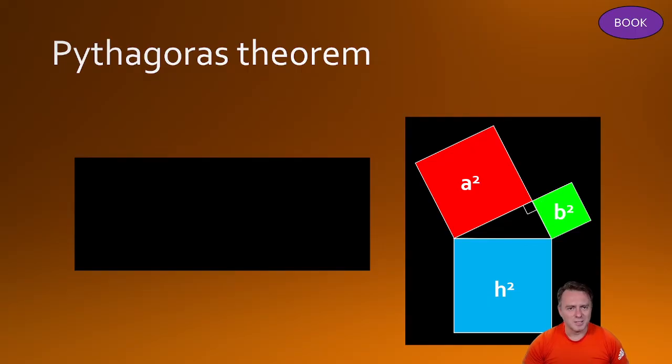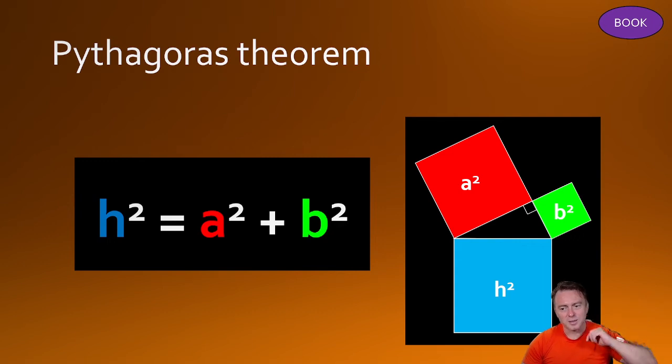Now because we have some understanding of algebra there's a better way of describing that which is what this rule is. So h squared is equal to a squared plus b squared. So the area that you see in the h is equal to the area of a squared plus b squared.